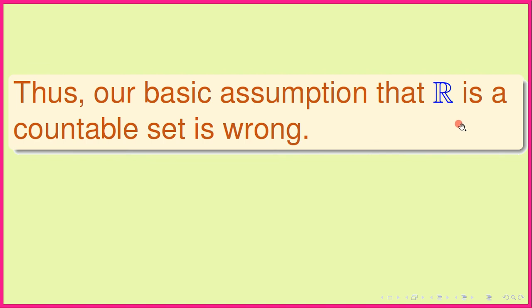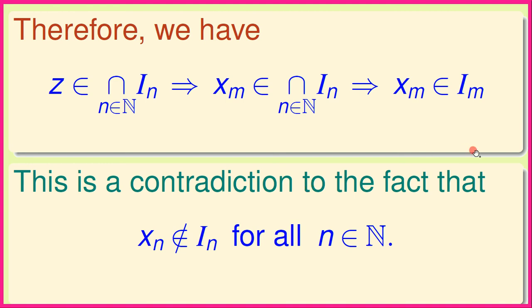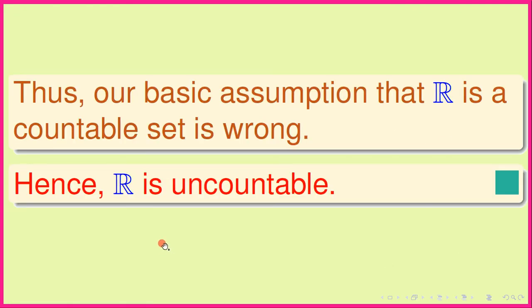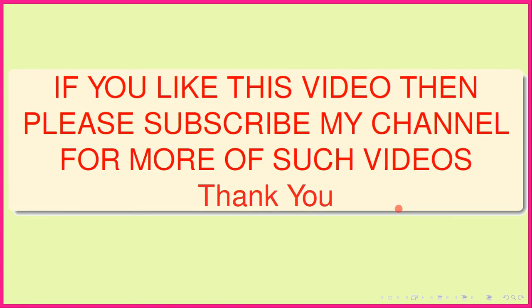Thus our basic assumption that R is a countable set is wrong, since it leads to this contradiction. Hence R is an uncountable set. This completes the proof. If you like this video, please subscribe to the channel for more such videos.